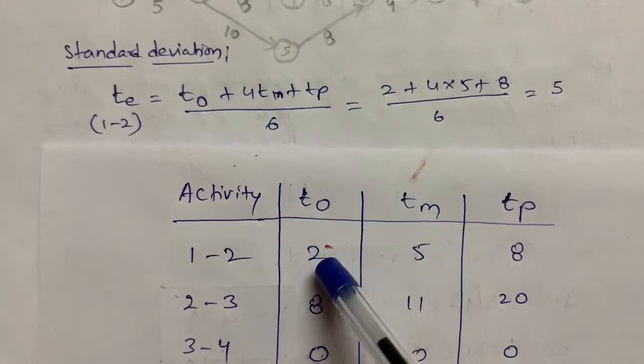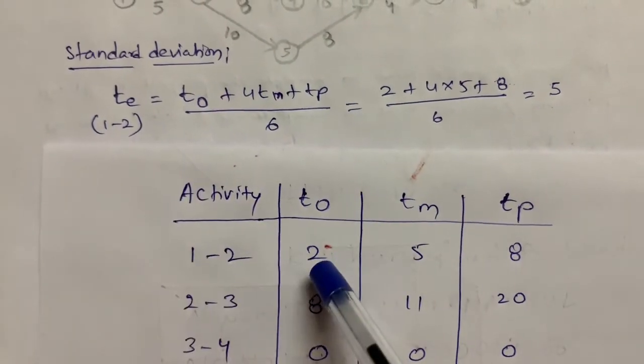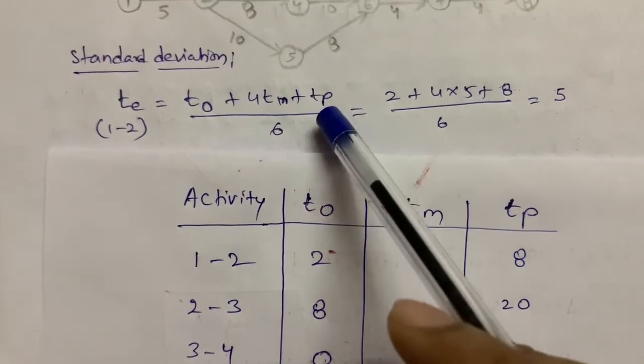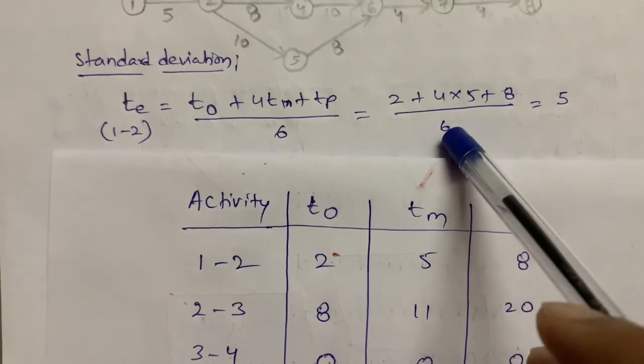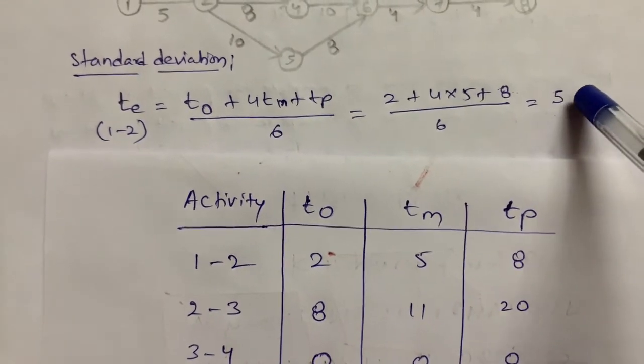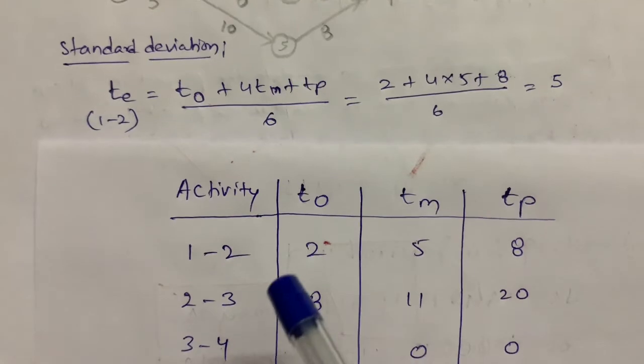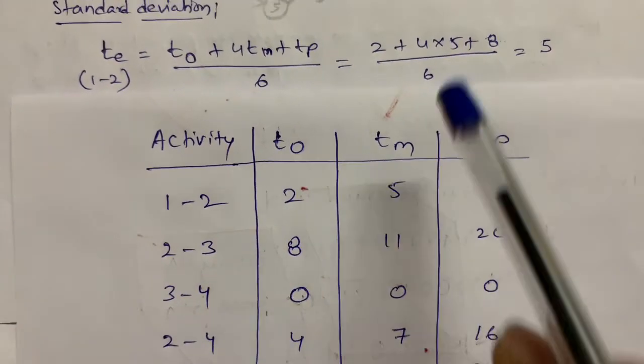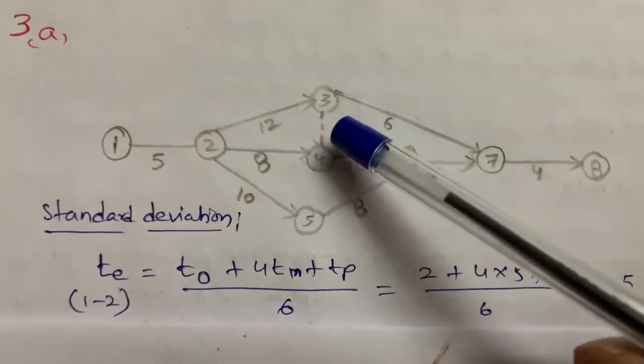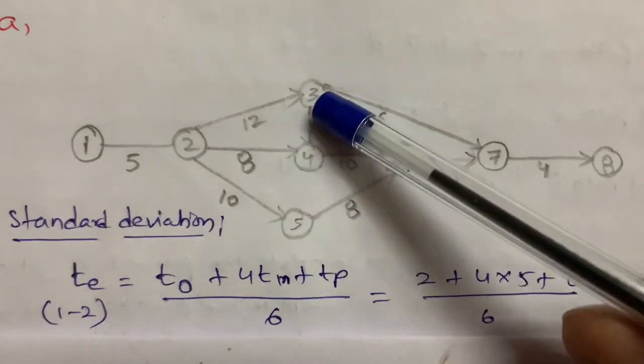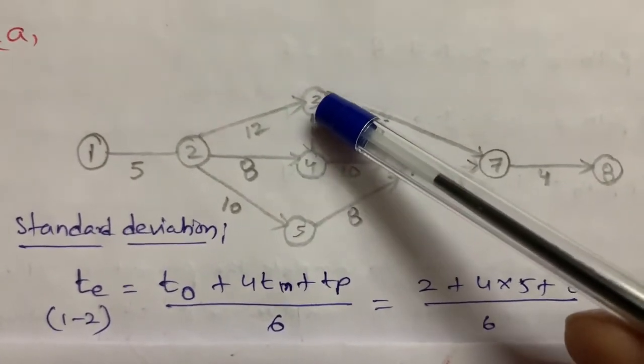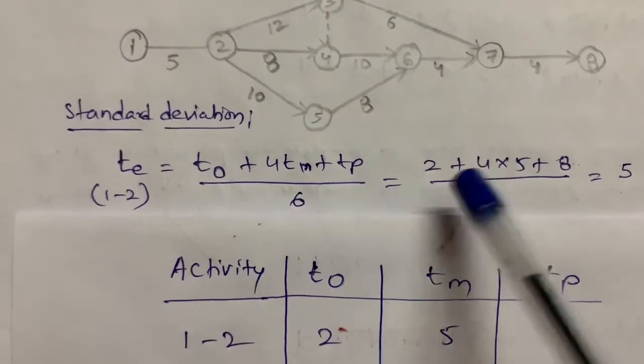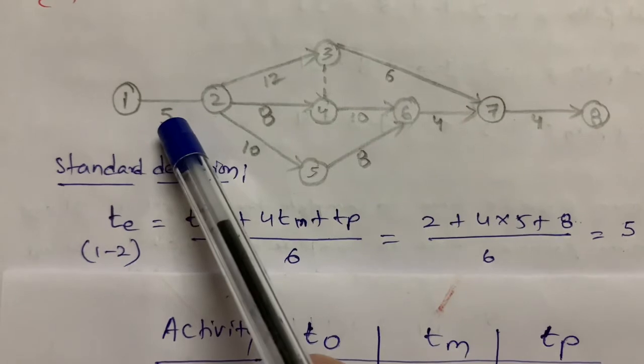TO value, we know that for 1 to 2 activity, that is 2. TM value is 5, 4 into 5 plus TP value is 8 by 6. I got 5. If it is days, we represent it as days. But here, 3 to 4, he given that 0. 0 is nothing but a dummy activity. There is no duration. We just represent it in dotted lines. Like that, I calculated for all the activities and I wrote the days here.